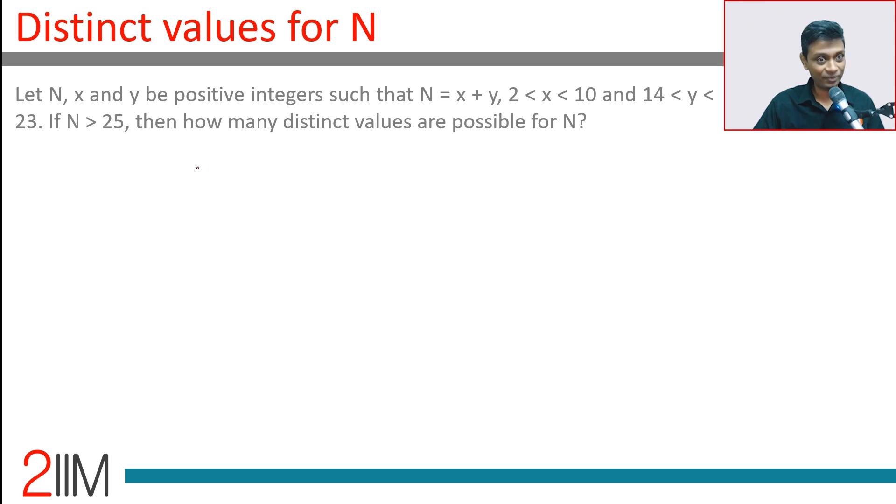Particularly recently, I got this question wrong. N = x + y, where 2 < x < 10 and 14 < y < 23. So y goes from 15, 16, 17 all the way to 22, and x goes 3, 4, 5, 6 all the way to 9. Then how many distinct values are possible for N?